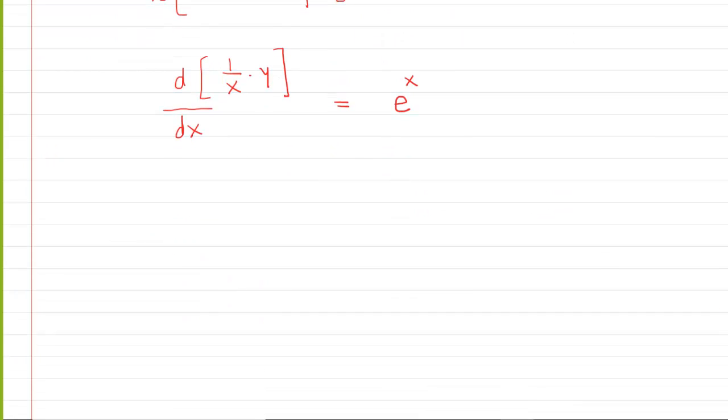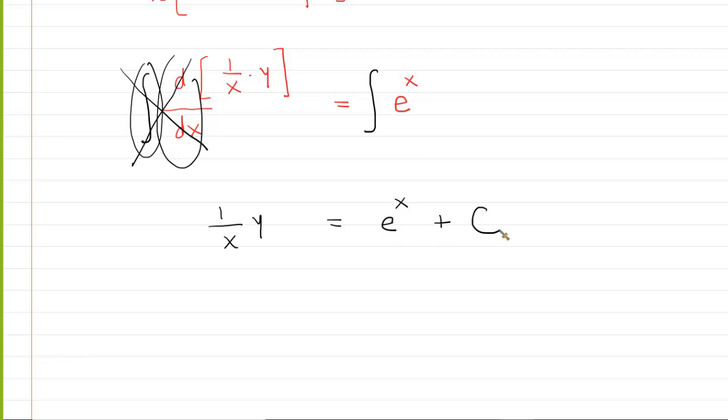So now we're going to integrate. You're going to integrate both sides. The integral and the derivative are like inverse functions, and they cancel each other out. So that just leaves you with 1 over x multiplied by y. On the other side, the integral of e to the x with respect to x is e to the x, and don't forget your constant of integration. So right now, on the left side, we essentially have y over x is equal to e to the x plus c.